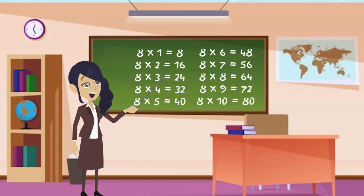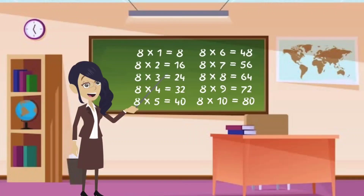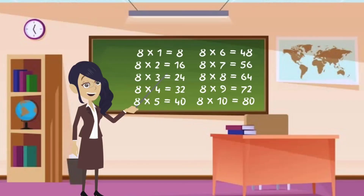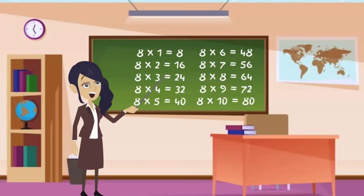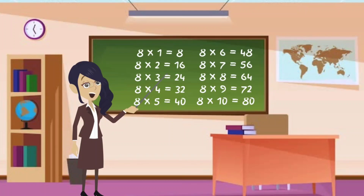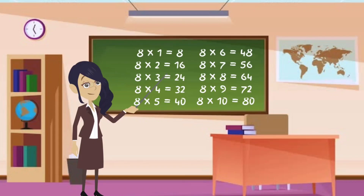Let's do this again together. 8 1s are 8. 8 2s are 16. 8 3s are 24. 8 4s are 32. 8 5s are 40. 8 6s are 48.